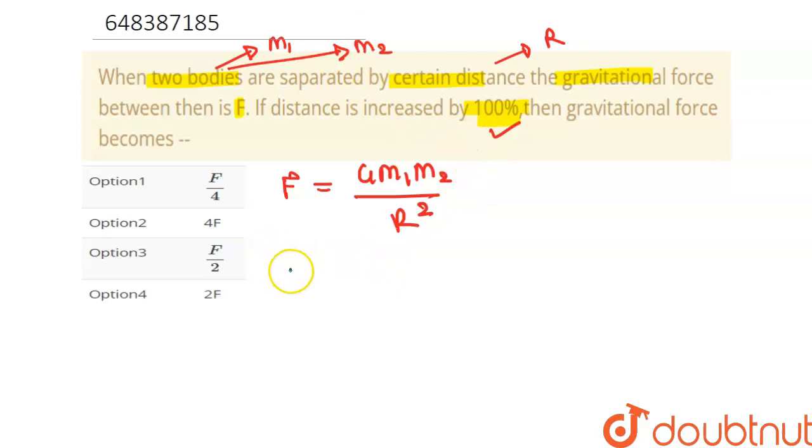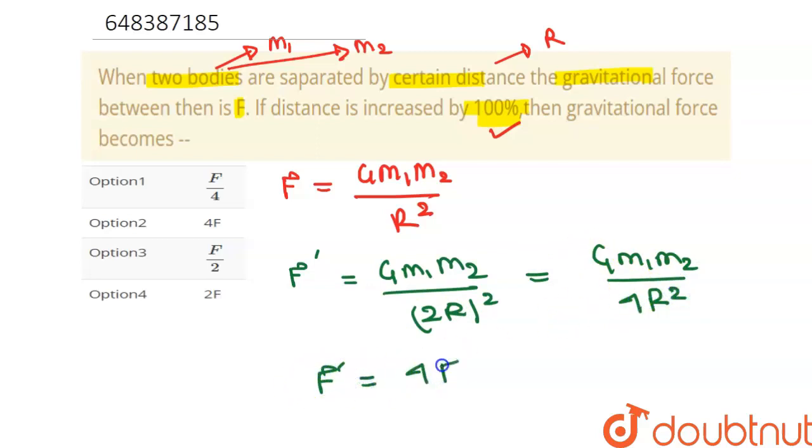Let's call this as F dash. This will be G m1 m2 over two r squared. So it will be G m1 m2 over four r square. This F dash is nothing but... sorry, one fourth of F.